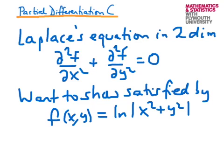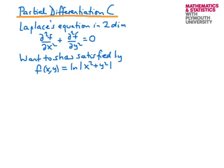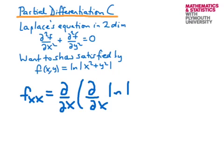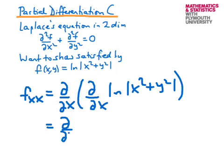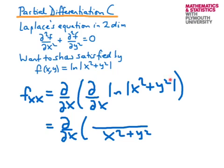We need to calculate the second derivative with respect to x, which I'll call f_xx. That means the derivative with respect to x of the derivative with respect to x of log(x² + y²). To do this we're going to use the chain rule. The derivative of the logarithm gives us 1 over the argument, so we get 1/(x² + y²), then multiplied by the derivative of x² + y² with respect to x, which is 2x.